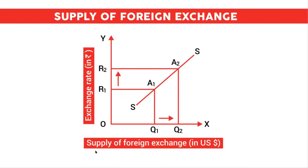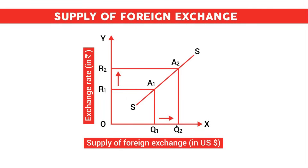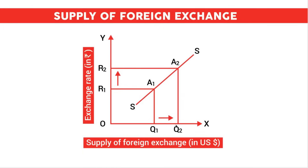This topic we will look at separately in the next video. Now we will see the supply curve of foreign exchange. In this diagram, supply of foreign exchange is shown on the x-axis in US dollars and exchange rate on the y-axis. The supply curve slopes upwards from left to right because there is a positive relationship between supply of foreign exchange and the foreign exchange rate. For example, at point A1, exchange rate is R1 and quantity supplied is OQ1. If exchange rate increases from R1 to R2, quantity supplied increases to OQ2 at point A2. This means when exchange rate increases, supply of foreign exchange increases; when exchange rate decreases, supply of foreign exchange decreases.